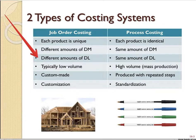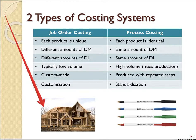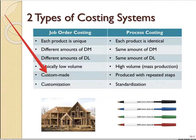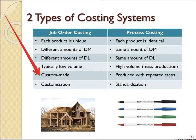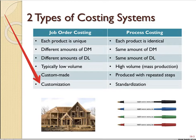Job order costing is typically used for low volume production. For example, a custom home builder only has resources to make a few homes at a time, and those homes are custom made to certain customer specifications. There is a lot of customization in the production process — it's set up to do whatever the specific customer needs.